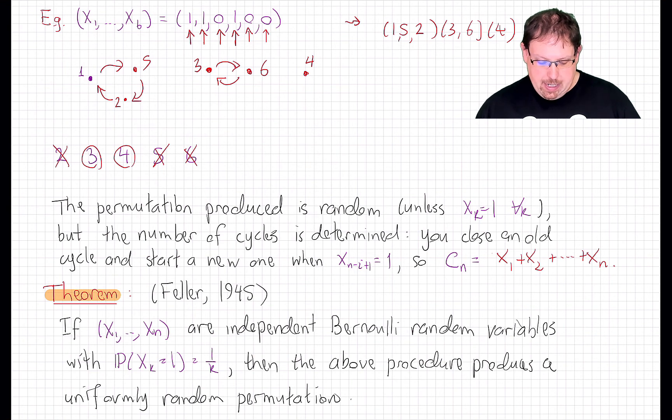And that brings us to Feller's coupling. Feller showed that if we choose the sequence of 1s and 0s to be independent Bernoulli random variables, where the parameter of the kth variable is 1 over k, like the example we just saw, then the above procedure produces a uniformly random permutation. To be clear, there's randomness coming in at two stages here.